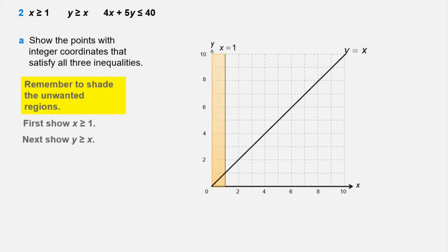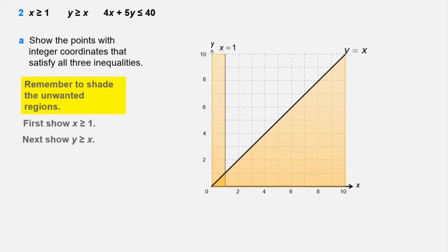For y ≥ x, the unwanted region is below the line y = x, because any point below has y less than x. We shade that unwanted region. The next inequality is 4x + 5y ≤ 40, so we plot the line 4x + 5y = 40.